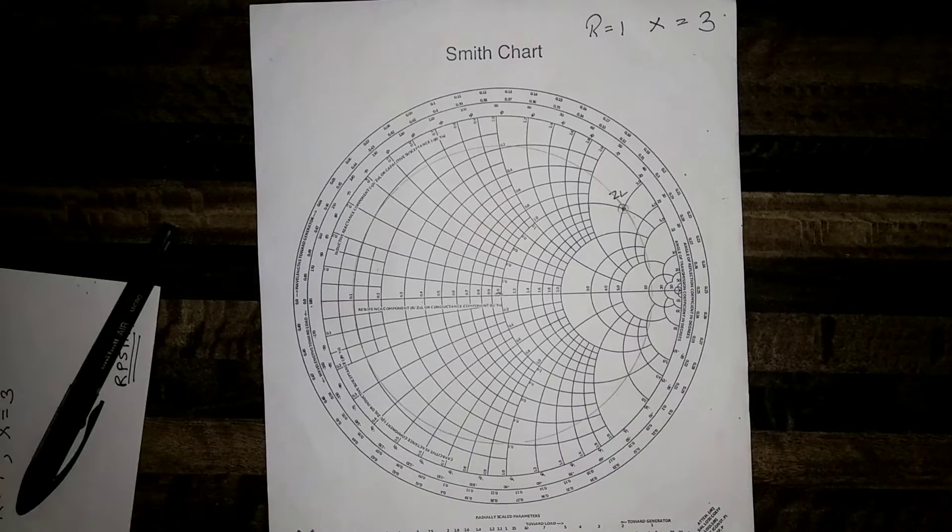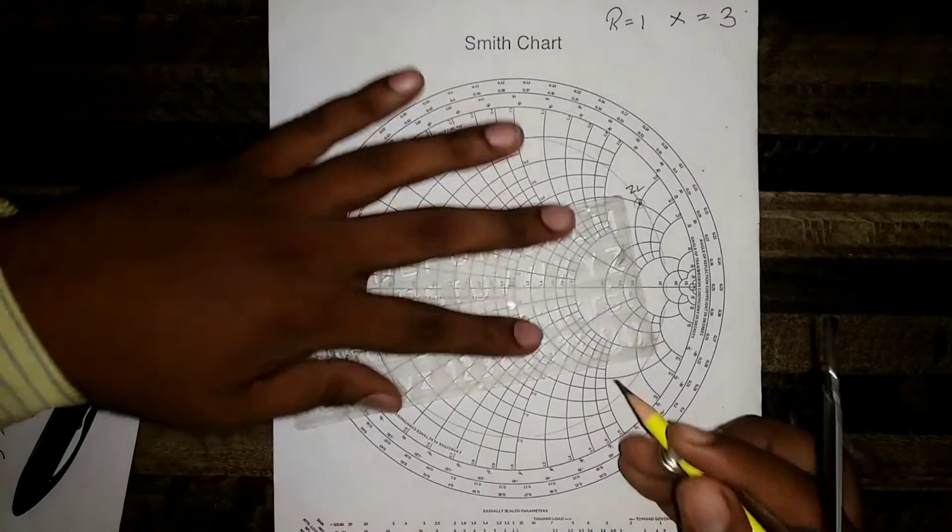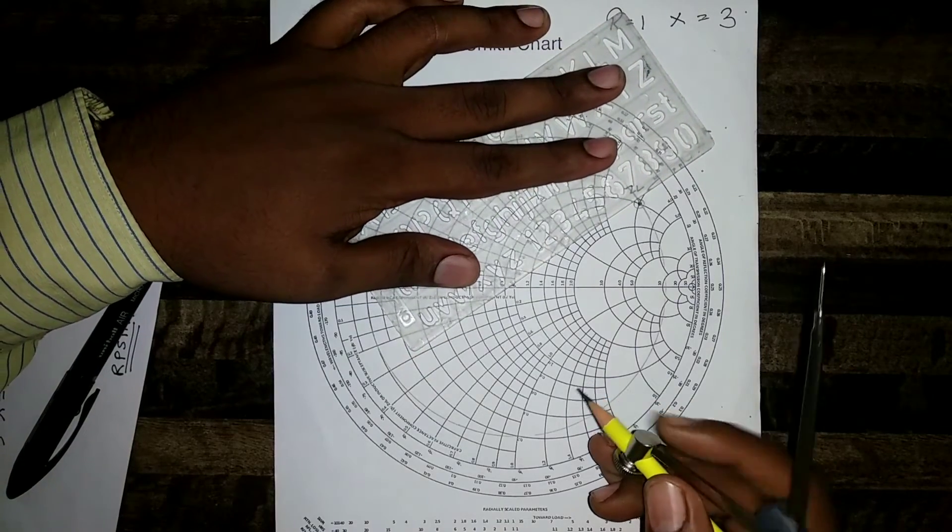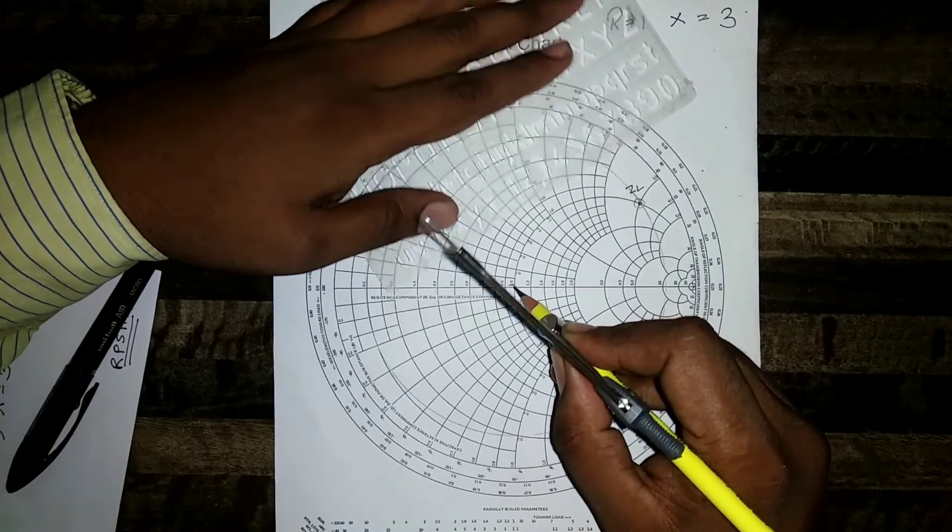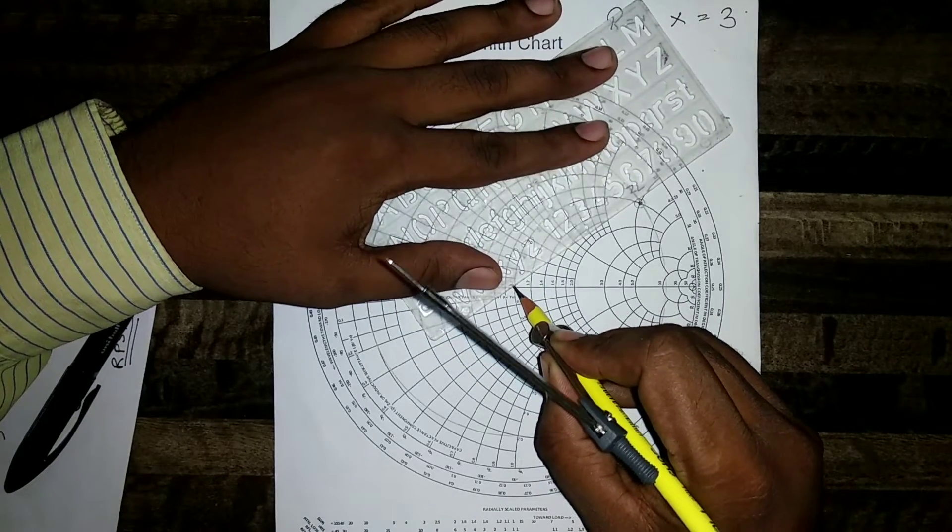Then take a scale and draw a line connecting center of the Smith chart and this point ZL.